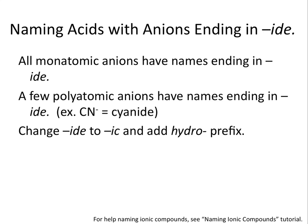First, let's talk about naming acids with anions that end in -IDE. If you need help naming anions and cations, see our naming ionic compounds tutorial. All monatomic anions have names ending in -IDE, and a few polyatomic anions also have names ending in -IDE. So when you have an acid composed of hydrogen ions and anions with the name ending in -IDE, you change the -IDE ending to -IC and add hydro- as the prefix.